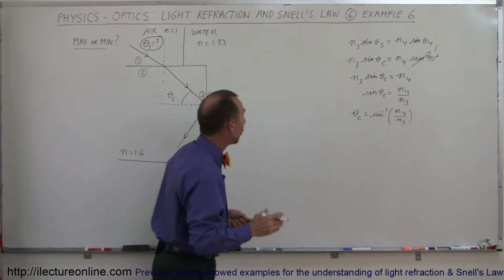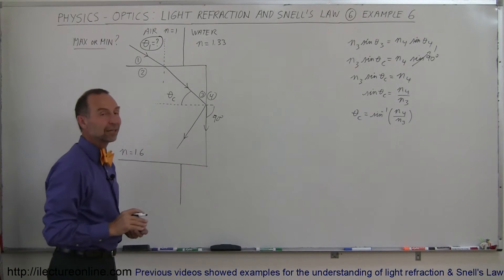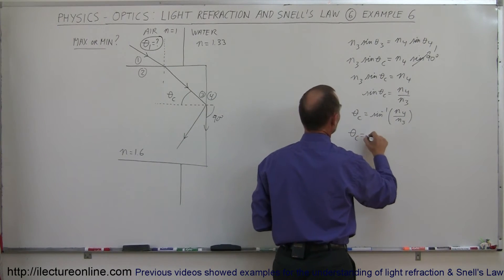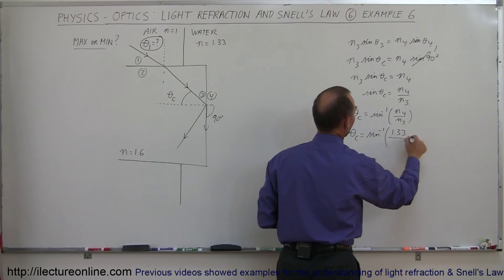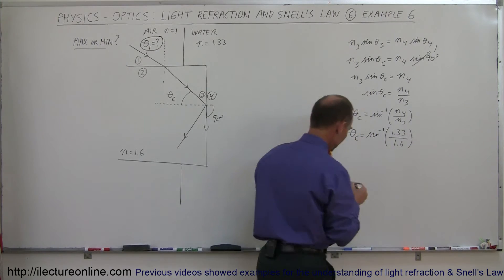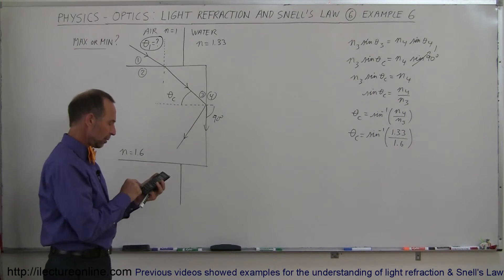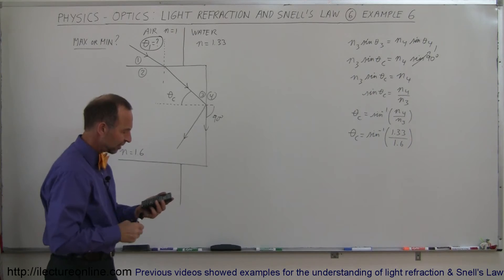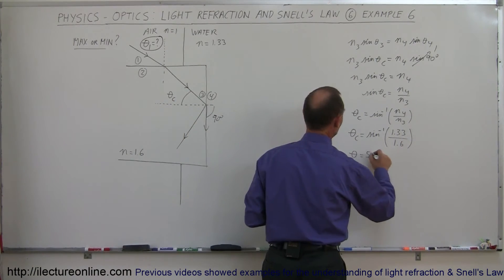Here n4 is water with index 1.33, and n3 is glass with index 1.6. So the critical angle equals arc sine of (1.33 / 1.6). Computing 1.33 divided by 1.6 and taking the arc sine gives 56.2 degrees. So the critical angle is 56.2°.